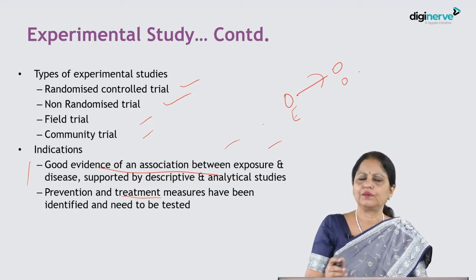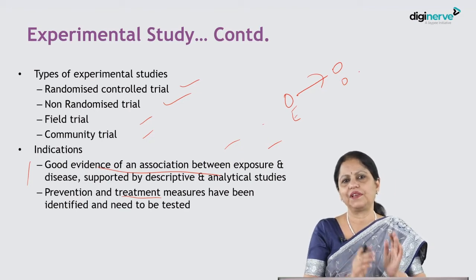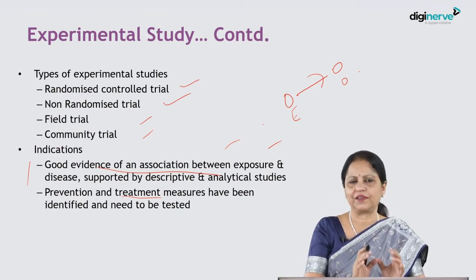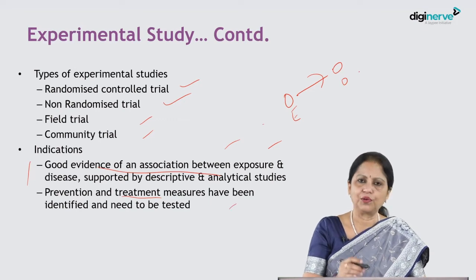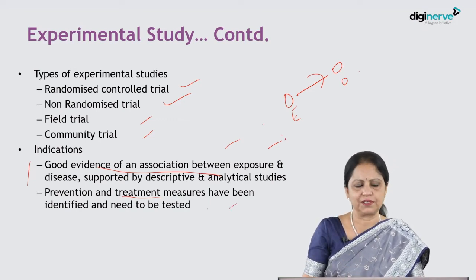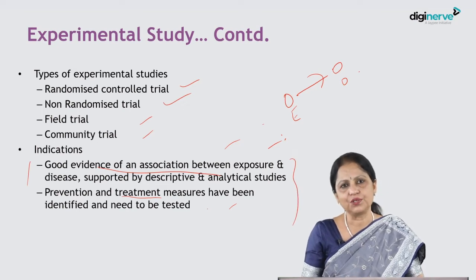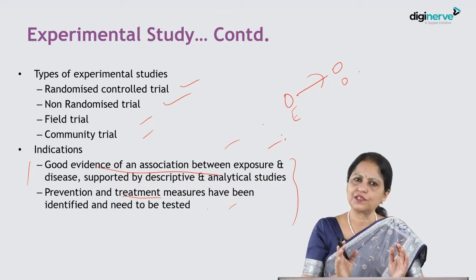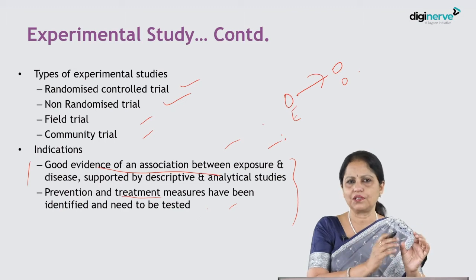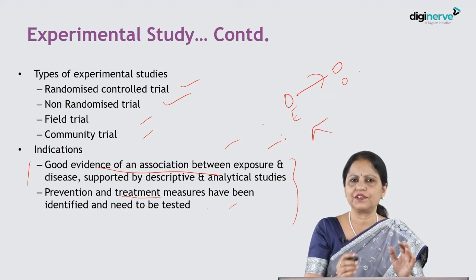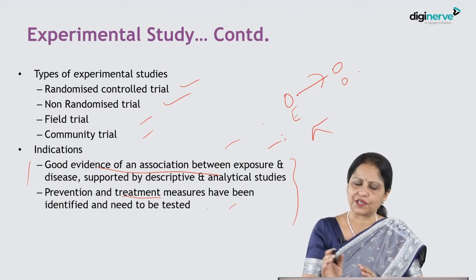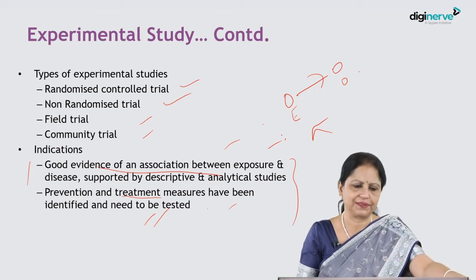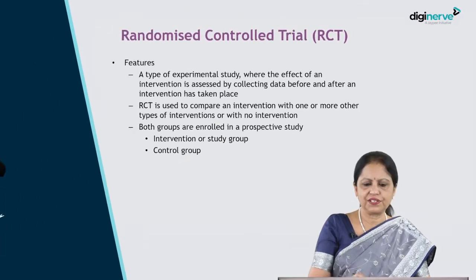For the problems we have encountered, we have developed preventive measures and therapeutic measures, and now we want to find their efficacy, effectiveness, and how they can control the problem. The indication for the experimental study is that the risk factor and outcome — exposure and outcome — are causally associated and proved. If this is the cause, then targeting an intervention measure on that cause should prevent the outcome, and these measures have been designed accordingly.